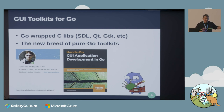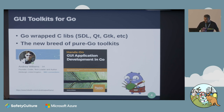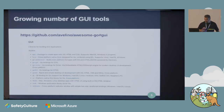Over here we've got a picture of Andrew - he's the lead on the team and he's written a book you can find on Amazon. Awesome Go also has a curated list of a number of toolkits.